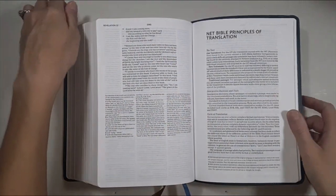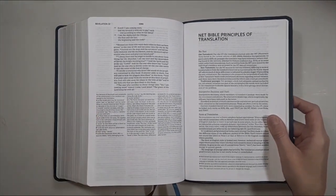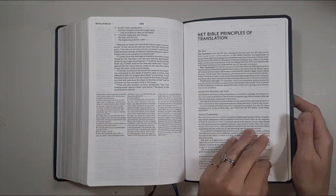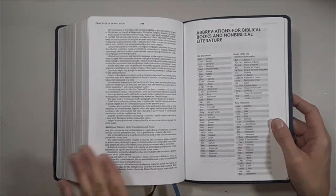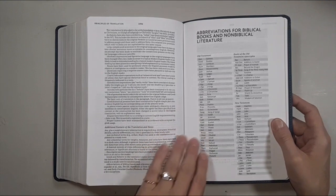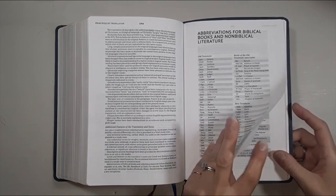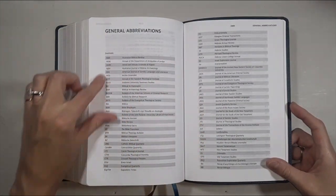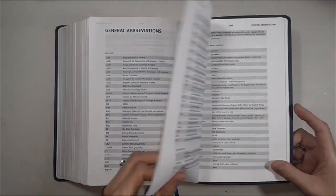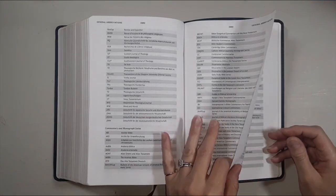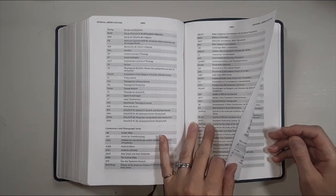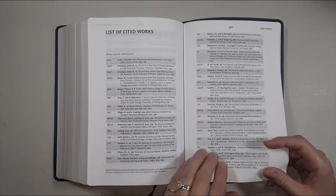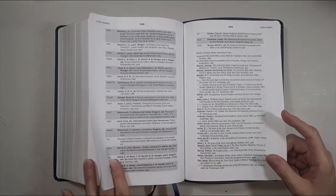In the back of the Bible here, it says NET Bible Principles of Translation, and then it tells you some of the decisions and tools and the decision-making process for the translation itself. Then it gives you abbreviations for biblical books and non-biblical literature, which is really nice. General abbreviations, which is helpful because sometimes you can see abbreviations in a Bible and wonder what in the world that's supposed to mean.